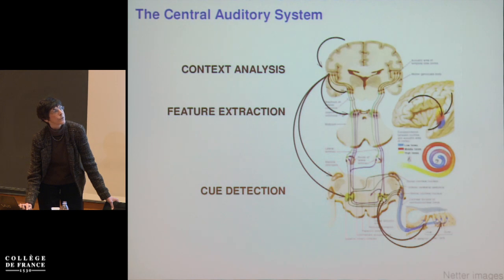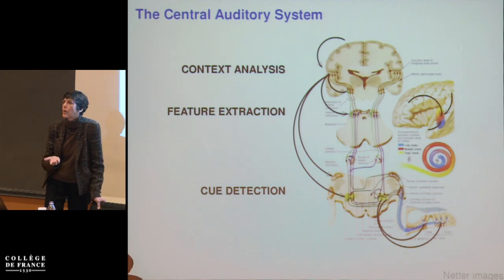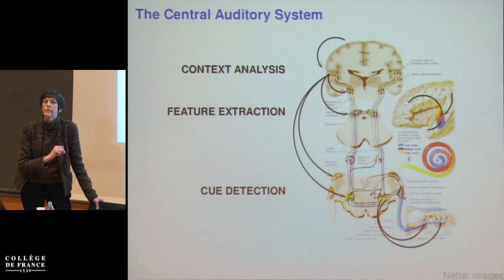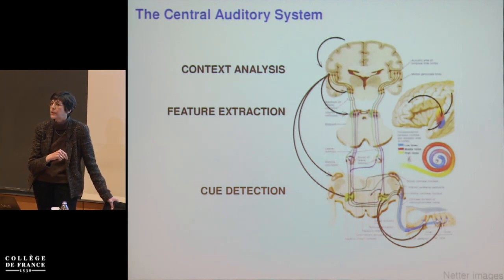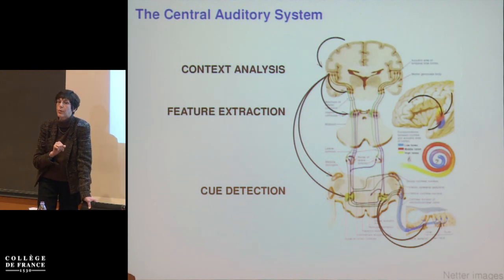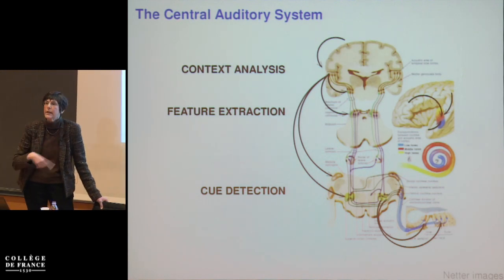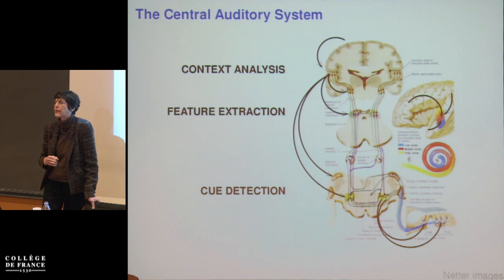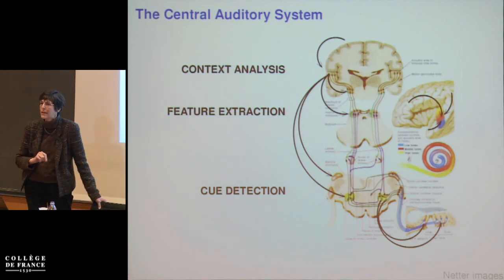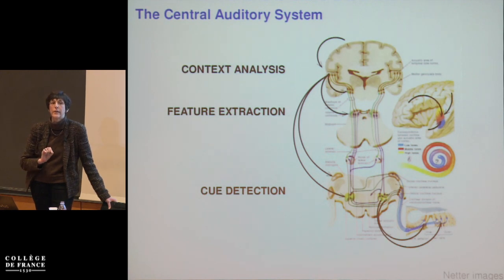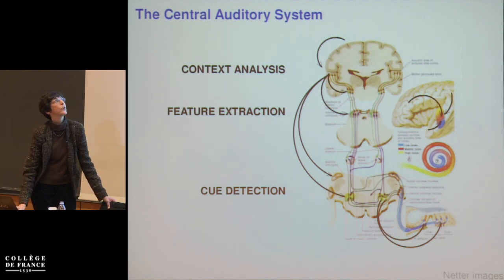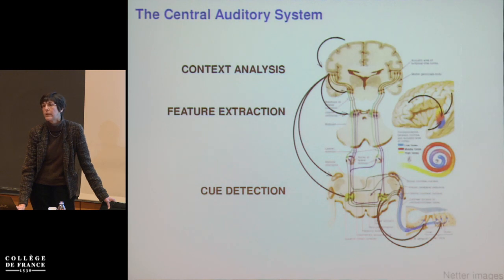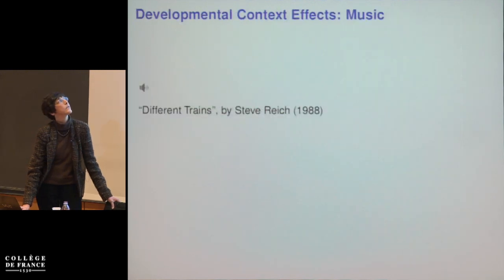Importantly, there are also projections from the superior olivary nuclei into the organ of Corti itself, providing an indirect route by which the cortex could effectively modulate the sensory transduction process. So by the very nature of ascending and descending inputs within the central auditory system, the whole auditory system is involved in contextual analysis. But I'm going to show evidence from multiple labs, including my own, that the cortex is probably key for driving that type of analysis.